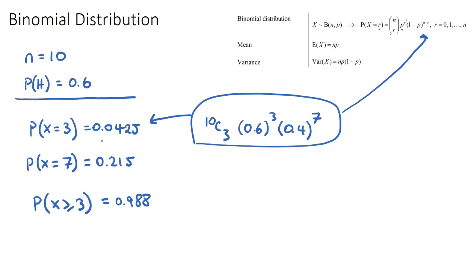This is very likely, so we get a probability of 0.988. To summarize: binomial PDF finds the probability of a particular exact number of heads, and binomial CDF handles a range of values.